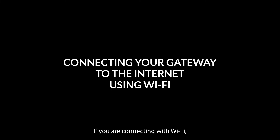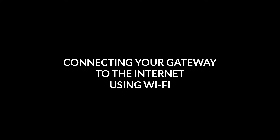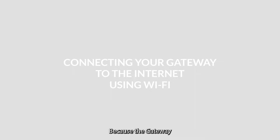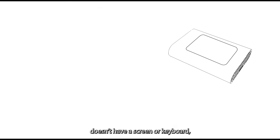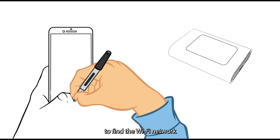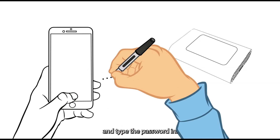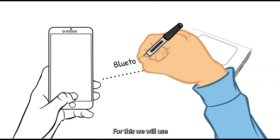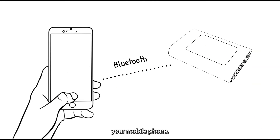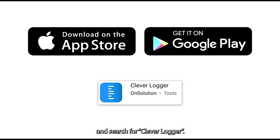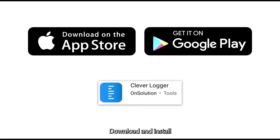If you're connecting with WiFi, the process has a few extra steps. Because the gateway doesn't have a screen or keyboard, we need some way to find the WiFi network and type the password in. For this, we'll use your mobile phone. Go to your phone's app store and search for CleverLogger. Download and install the free CleverLogger app.